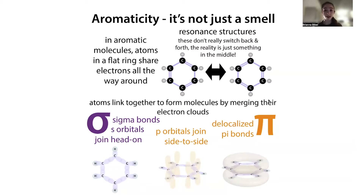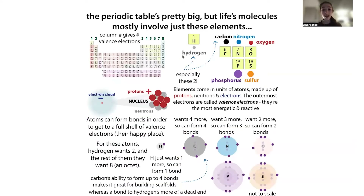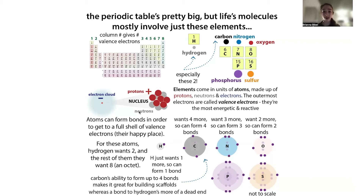To understand aromaticity, we need to understand what these atoms represent. These C's and H's are all different atoms of elements - carbon and hydrogen. Each of these atoms is made up of smaller parts called subatomic particles. Basically, subatomic particles consist of protons, neutrons, and electrons. Protons are positively charged, and the number of protons an atom has defines that element. Carbon has six protons and oxygen has eight protons, for example.